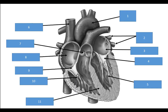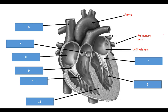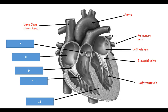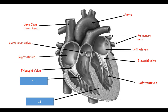Here is a bit more practice, and then the answers one by one: the aorta, pulmonary vein, left atrium, bicuspid valve, left ventricle, vena cava, semilunar valve, right atrium, tricuspid valve, right ventricle, and septum.